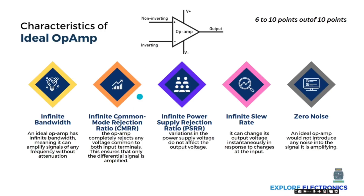The next thing is infinite common mode rejection ratio (CMRR). CMRR means that if the non-inverting terminal and the inverting terminal have the same input, the output will be rejected. There will be infinite common mode rejection ratio in the ideal op-amp, meaning both terminals should not have the same input — it will reject the common input between the two.